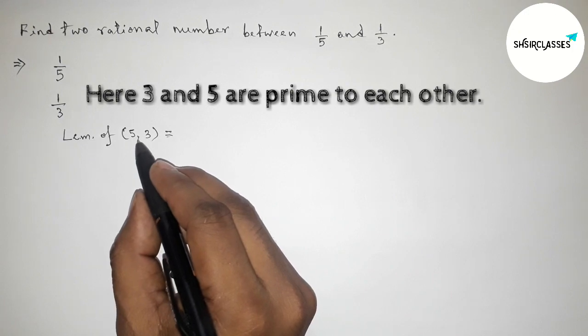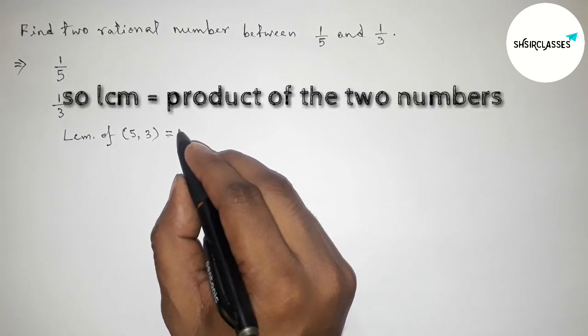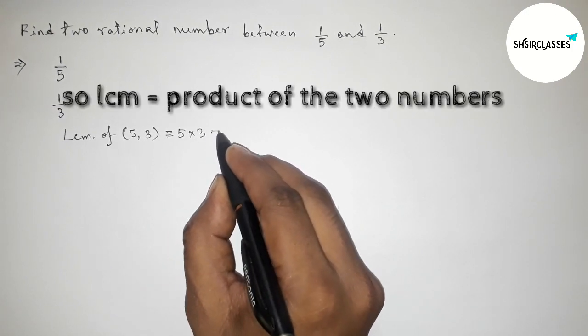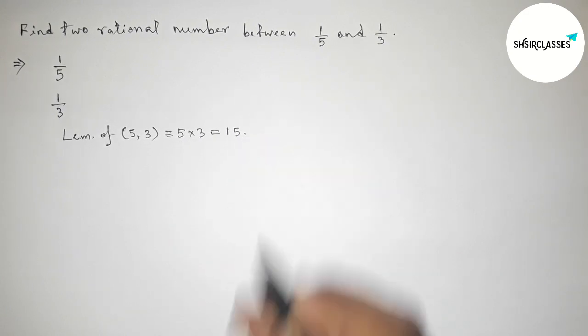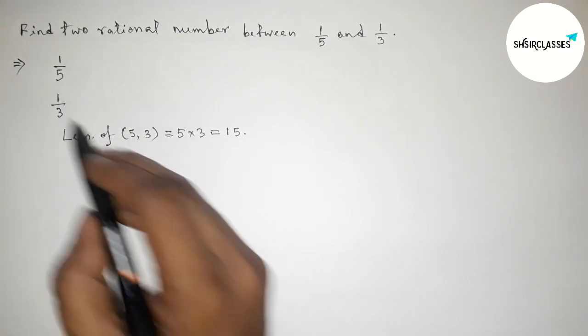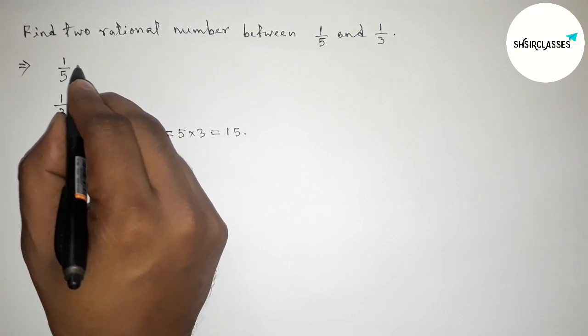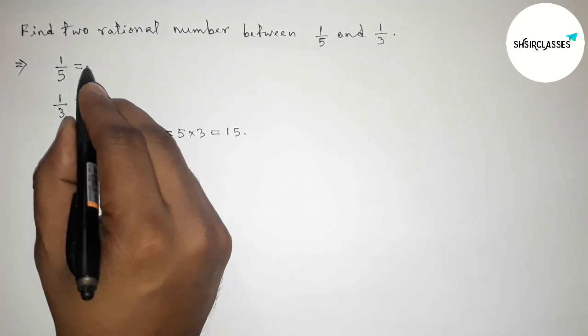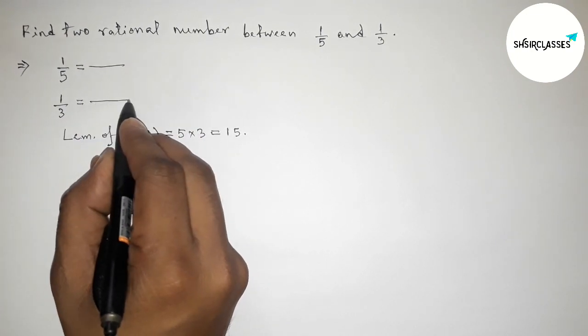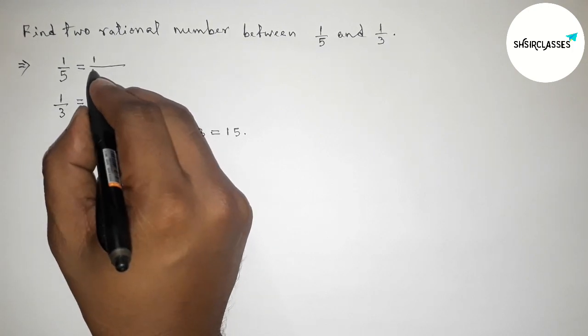First, finding LCM of 5 and 3. Since 5 and 3 are prime to each other, the LCM will be the product of the two numbers. So 5 threes are 15.